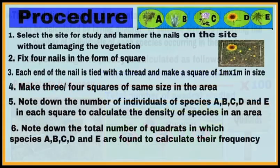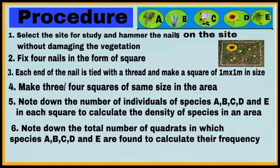Now write the procedure. Point number one: select a site where you want to calculate population density and population frequency of different plant species, and hammer the nails without damaging the vegetation. Point number two: fix four nails to make a square, then tie the ends of the four nails with thread so that you get a proper square.